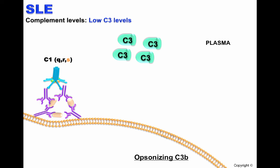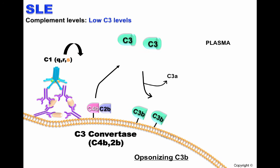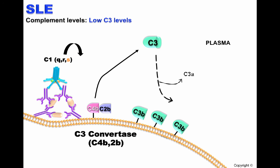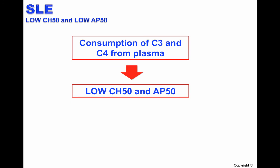Similarly, C3 levels are also low in plasma. This is because the C1 complex cleaves C4 and C2, forming membrane-bound C3 convertase, C4B2B. C3 convertase cleaves C3 into C3A and C3B. C3B is continuously deposited; therefore, same as C4, C3 is continuously used up and consumed. Consumption of C3 and C4, or low levels of C3 and C4 in plasma, leads to low CH50 and AP50 activity.